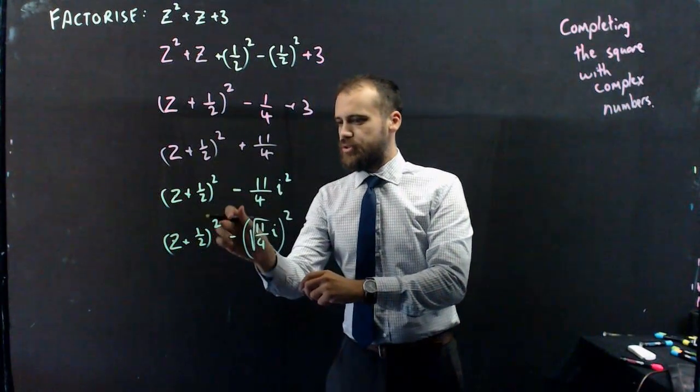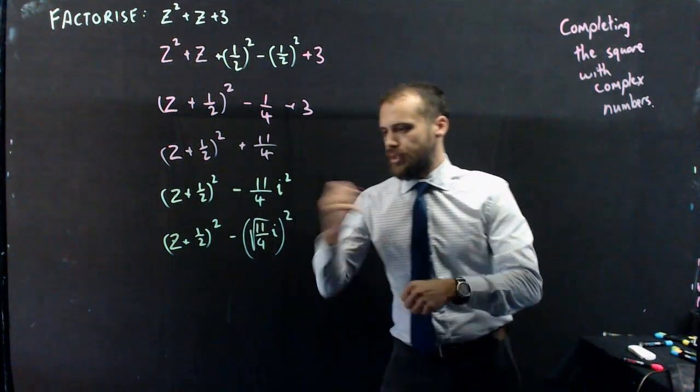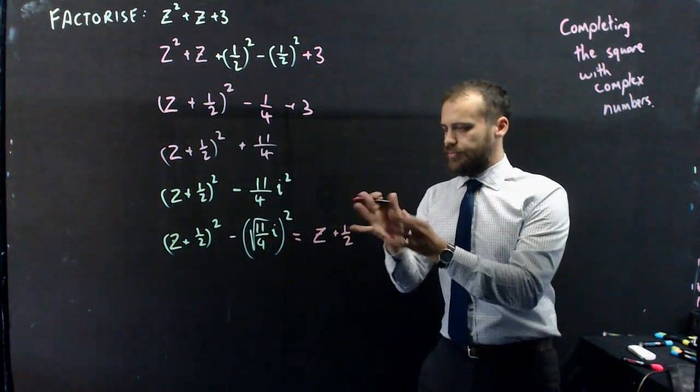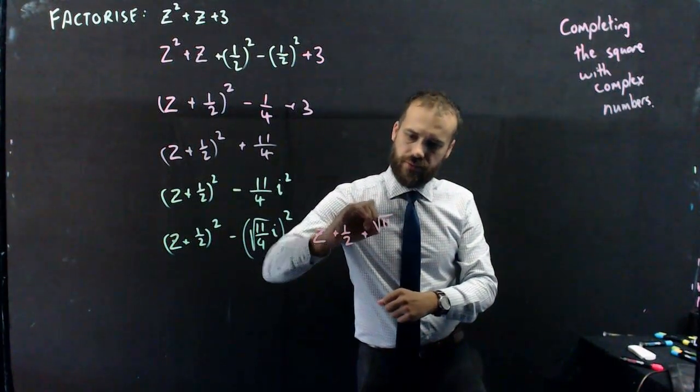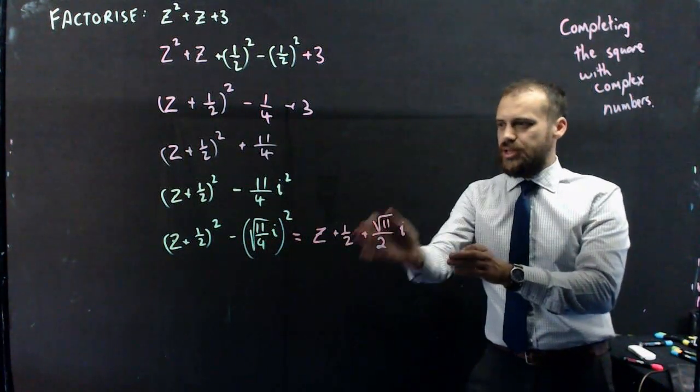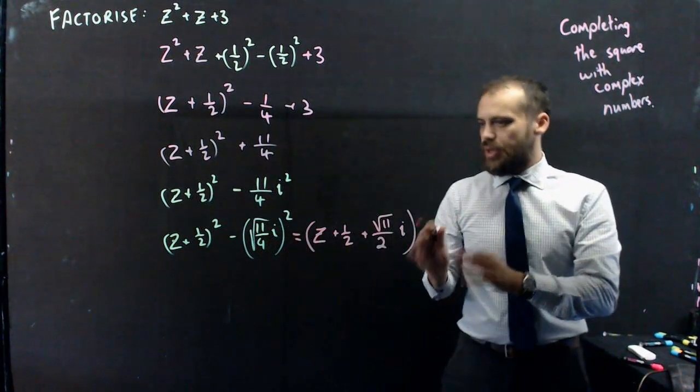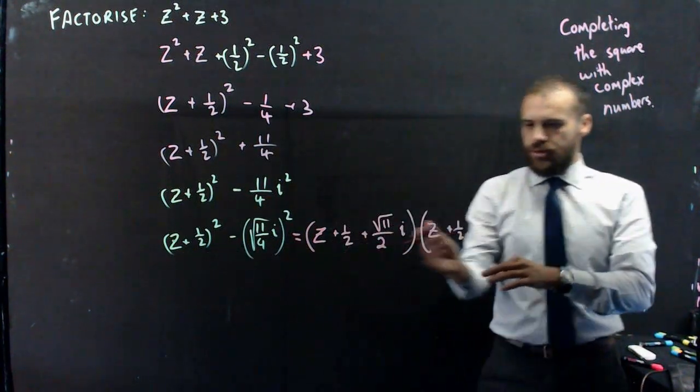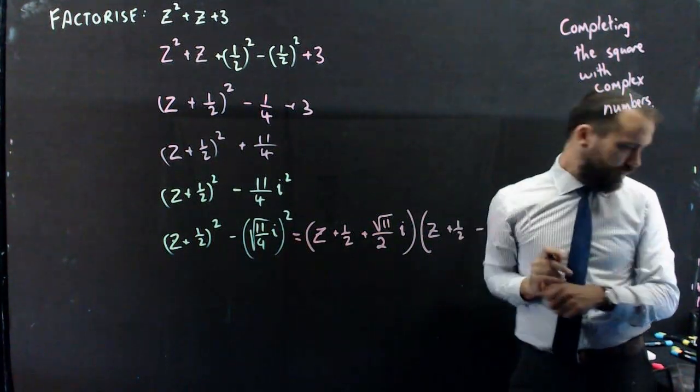We have z plus 1 half squared minus all of this squared, and we can put it into a difference of two squares. So, it's going to be z plus 1 half plus root 11 on 2i. Now, I've just changed root 11 on 4 to root 11 on 2. That's just nicer and neater. You can see that that root 4 is going to pop out. And then, we have z plus 1 half, which is this bit here, minus root 11 on 2i.